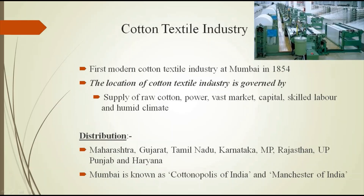The first modern cotton textile mill was started at Mumbai in 1854. Cotton textile industry is the biggest and most important branch of textile industry in India. Cotton weaving is not new to India — from ancient times we had hand looms. The first modern textile industry started in 1854, that is the cotton mill at Mumbai. Now India ranks second in the world in cotton fabric production, with China in first place. India is also the second largest exporter of cotton textile.